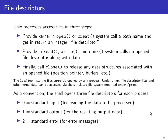A UNIX process can access files in three steps: you first open a file with the open call, which receives a file name, locates the file in the file system, and then creates a file descriptor — a data structure associated with the process in the kernel. It returns an integer reference to the application with which that data structure can now be referred to, and this is known as the file descriptor.